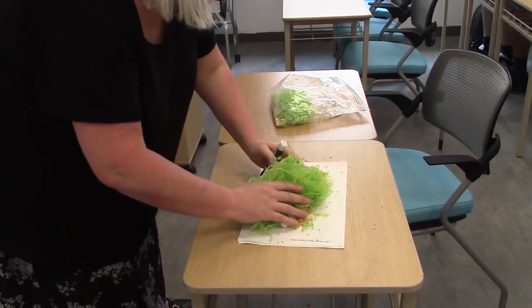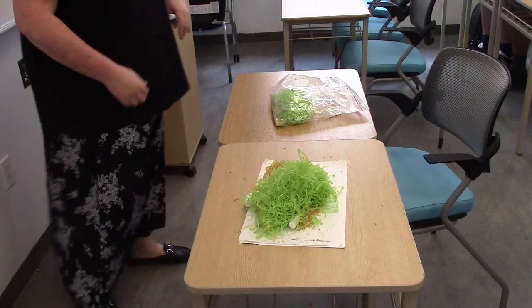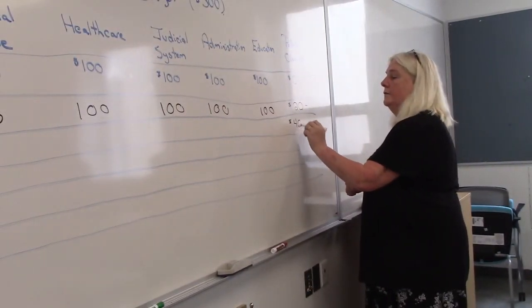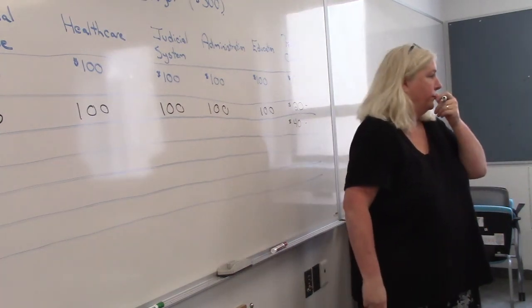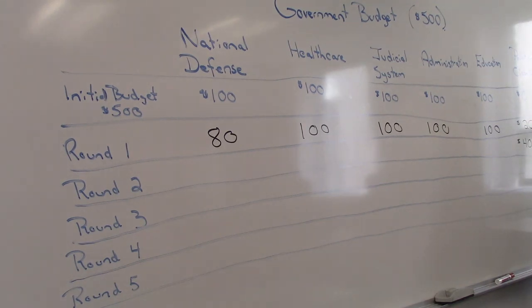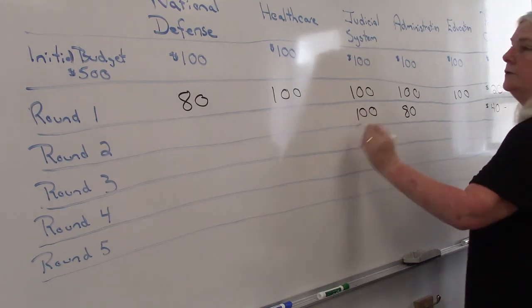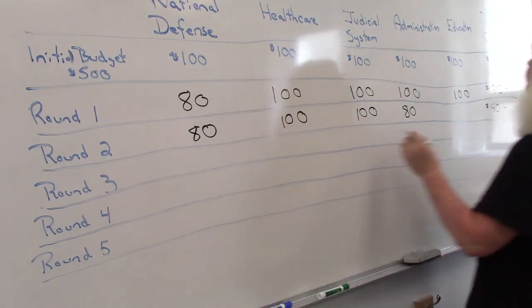We still have a fair bit left over, and remember your drinking water comes from this. Do you want to have another worker come and clean up the beach? So we're now allocating $40. Where are we going to take it from? Administration. So administration falls to $80, keeping $100 with judicial, $100 with healthcare, $80 with national defense, and $100 with education.